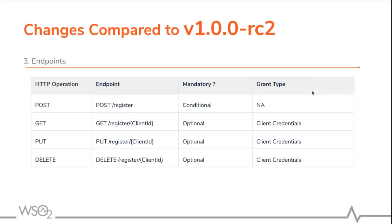When we look at the endpoints, in version 1.00RC2 only a POST request was introduced, but in version 3.1, GET, PUT, and DELETE endpoints were added to the specification. Among these endpoints, the POST endpoint is used to register as a client in the ASPSP. The GET request can be used to retrieve the client credentials. The PUT request can be used to change the values in the SSA. The DELETE call is used to delete the client from the ASPSP.